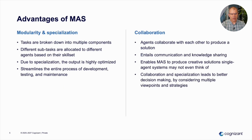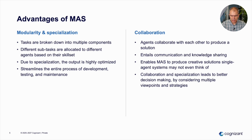Some advantages of multi-agent systems: one is modularity and specialization. Tasks are broken down into smaller components, and each component is assigned to an agent based on their skill set. This results in highly optimized output and streamlines the process of developing, testing, and maintaining multi-agent systems. A second advantage is collaboration — agents collaborate with each other to come up with a solution, enabling knowledge sharing and solutions that single-agent systems cannot achieve.